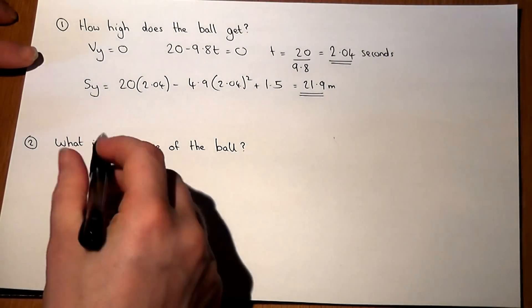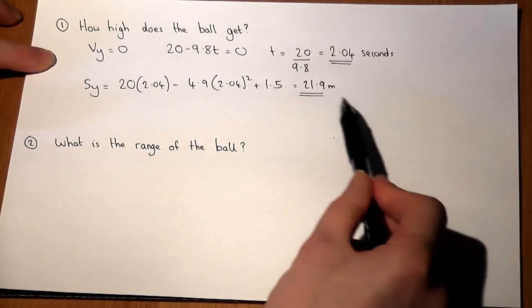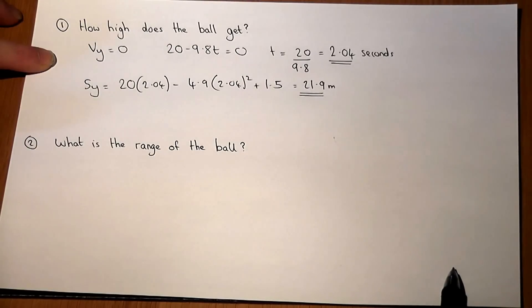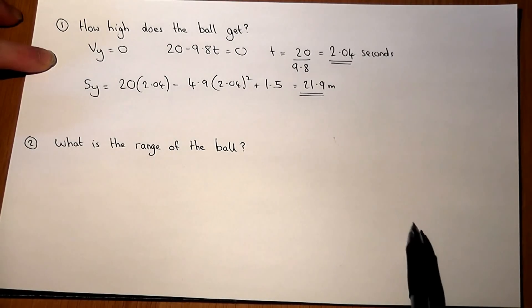The next question is, what is the range of the ball? Now the range is how far the ball actually travels. So when does it hit the ground and how far has it gone?